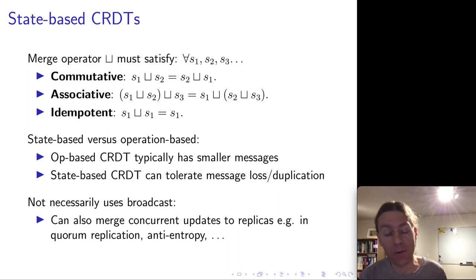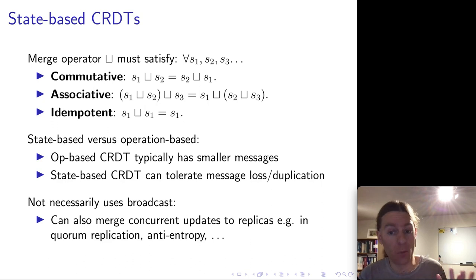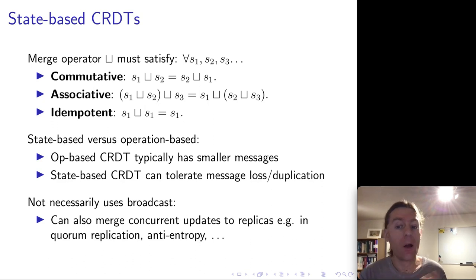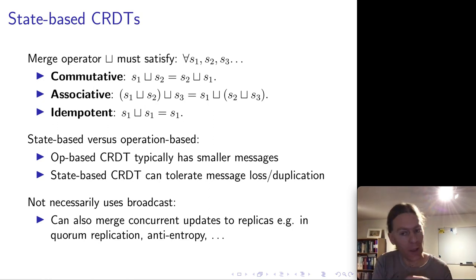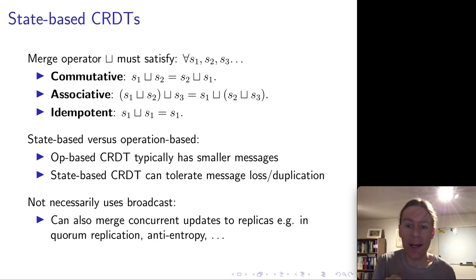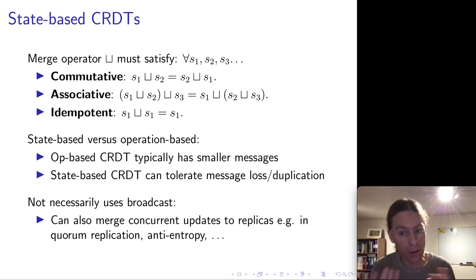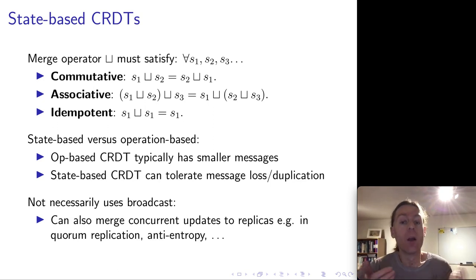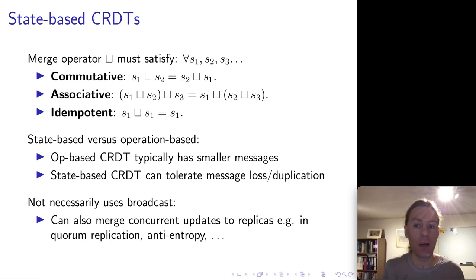Another nice thing about state-based CRDTs is that you can use them in other forms of replication beyond broadcast. For example, in quorum replication from lecture five, a client sends an update to a quorum of replicas, and then the replicas have an anti-entropy protocol amongst themselves to resolve differences. State-based CRDTs work very well in this setting where replicas want to exchange their updates through some kind of anti-entropy protocol.